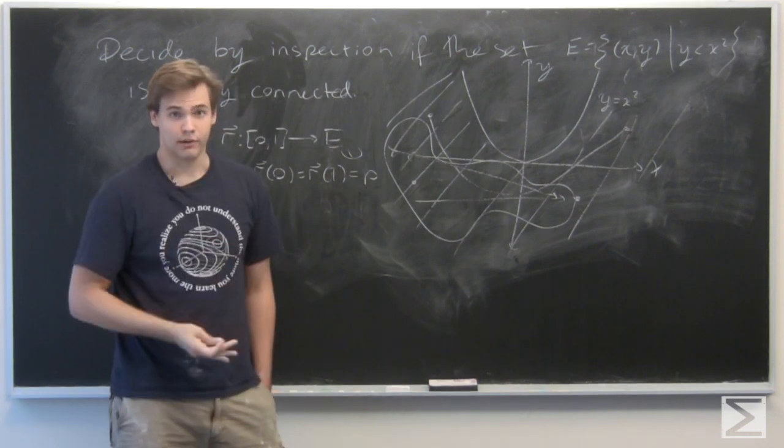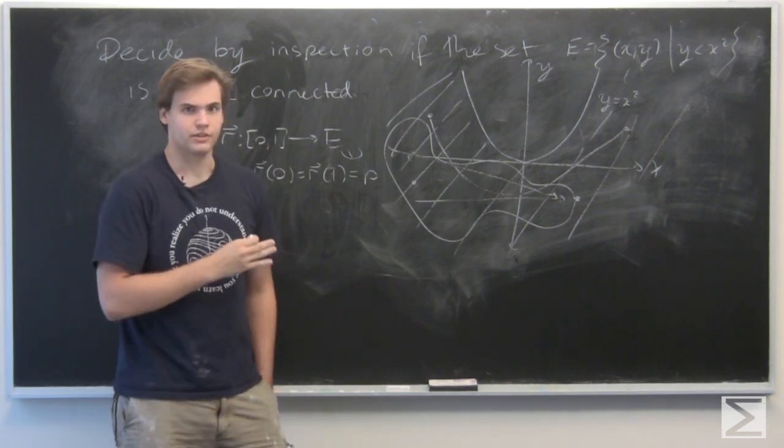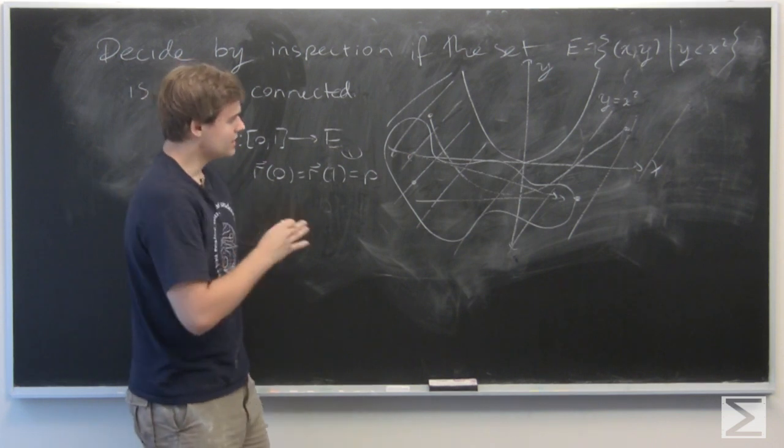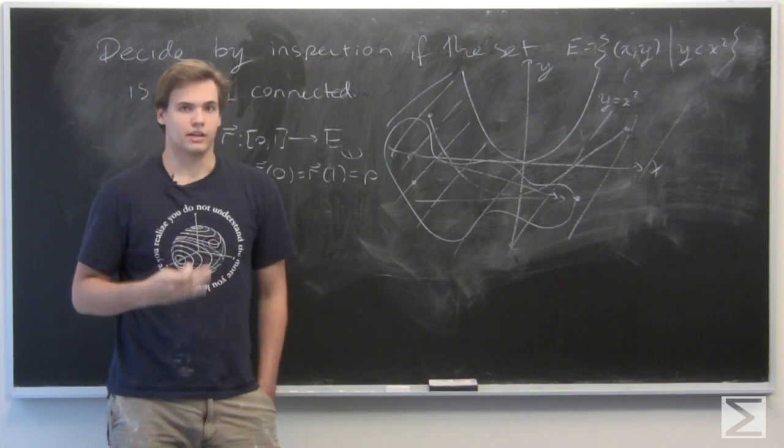So we see by drawing a lot of diagrams like that, this is obviously not a rigorous way of proving this. It actually takes quite a bit of work to do these things in general. But you can see by inspection that this is, in fact, a simply connected subset of R2. And we're done.